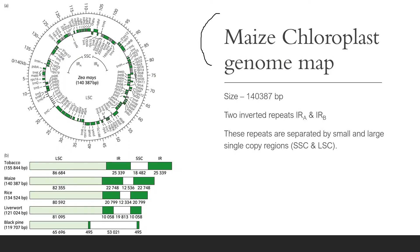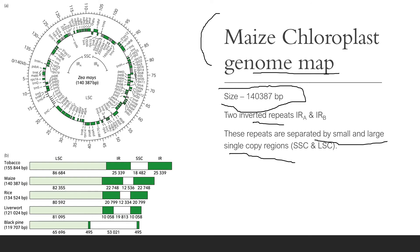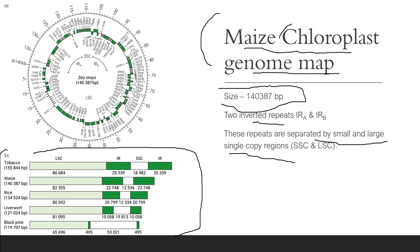The maize chloroplast genome map is very complex, with a size of about 140,387 bp. It has two inverted repeats — IRA and IRB — separated by small and large single-copy regions. Comparing sizes across species, tobacco has the largest chloroplast genome at 155,844 bases, while maize is the second highest. You may pause the video to review the full comparison table.